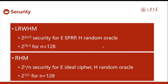Our security results are as follows. For the LRW-HtMAC scheme, we prove 2n/3 security when the block cipher is modeled as a strong pseudorandom permutation and the hash function H as a random oracle. For n=128, the concrete security is 2^85.3, which is much stronger than 2^64 and sufficient for constrained settings. For the ReKing-based HtMAC, we prove asymptotically optimal 2^n security when the block cipher is modeled as an ideal cipher and the hash as a random oracle. The concrete security is 2^121 for n=128.